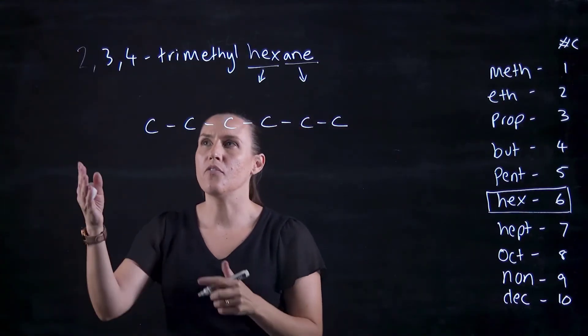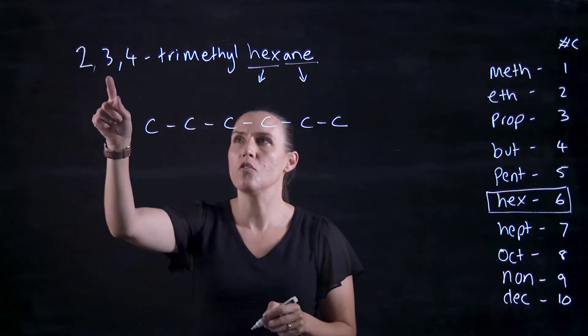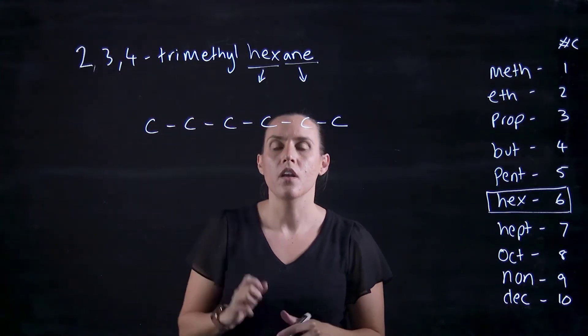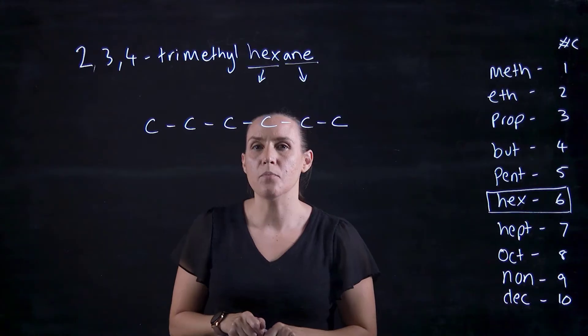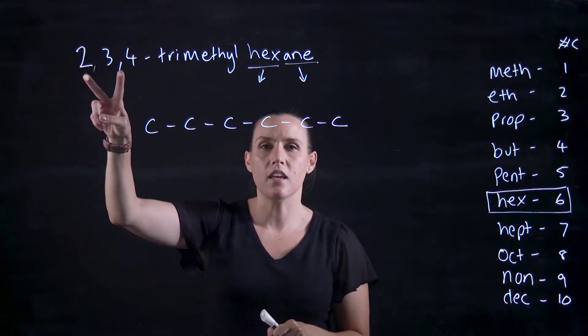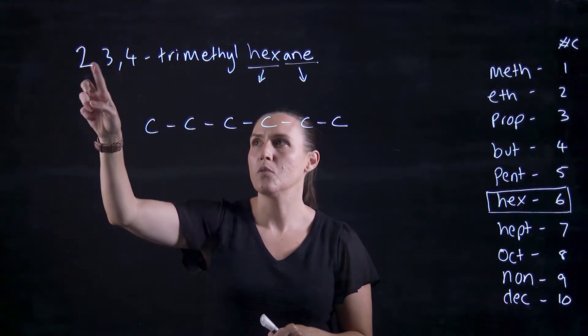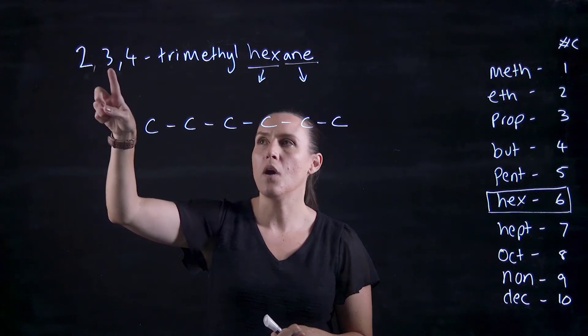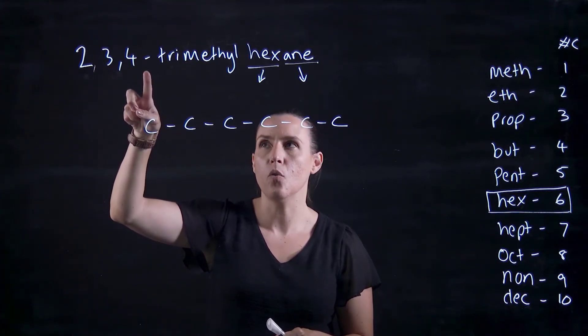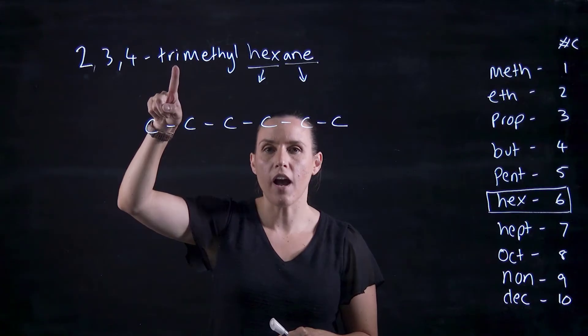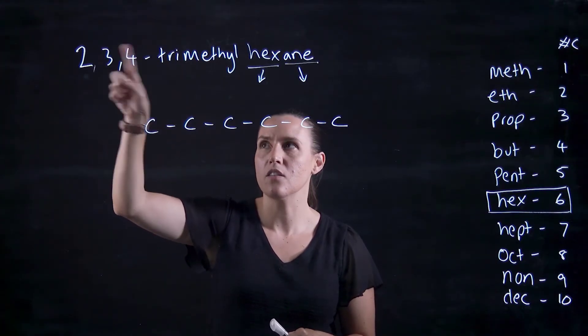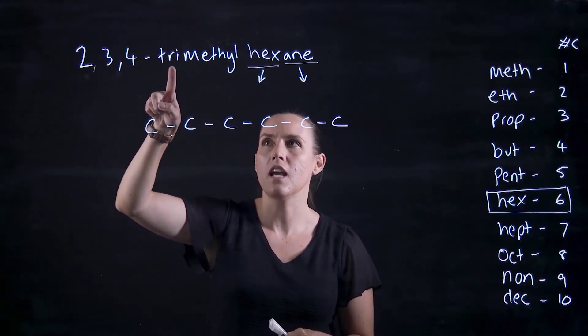Now looking at the front part of this, I've got 2,3,4-trimethyl. So when we're looking at our numbers, this is indicating the carbons that it's coming off. So we've got one coming off carbon 2, one coming off carbon 3, one coming off carbon 4. And then I say tri to indicate that there's three groups in total that are coming off.